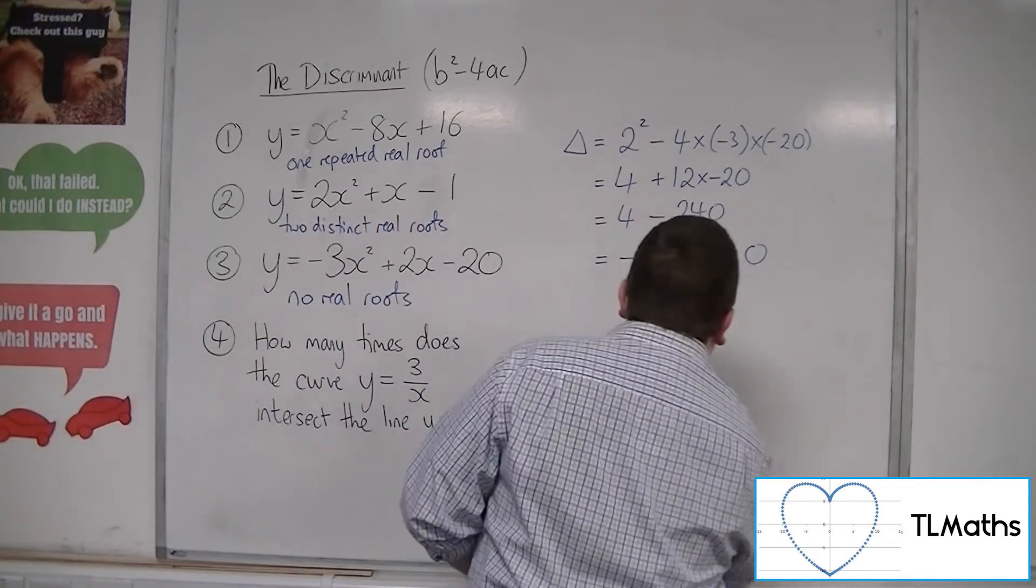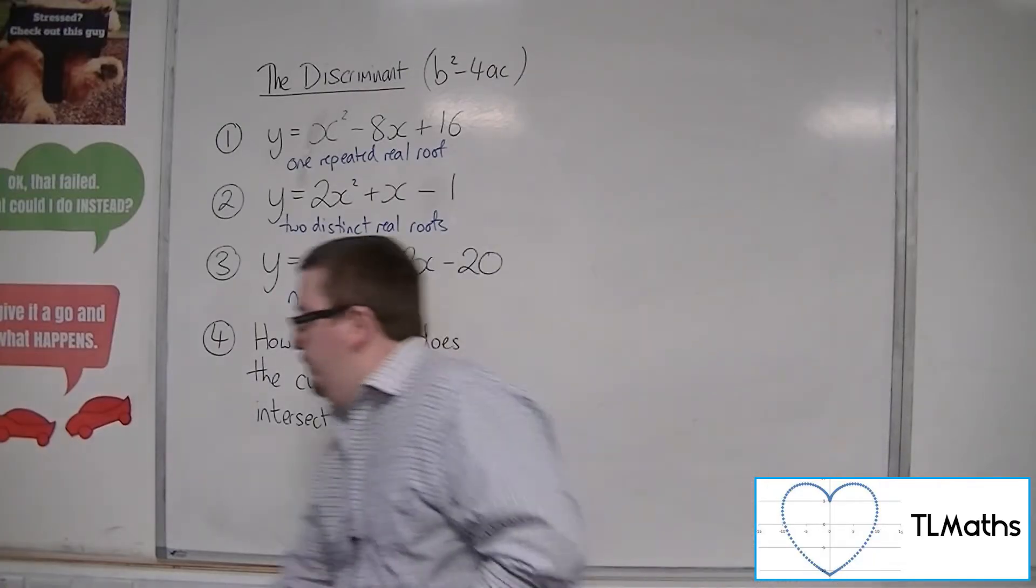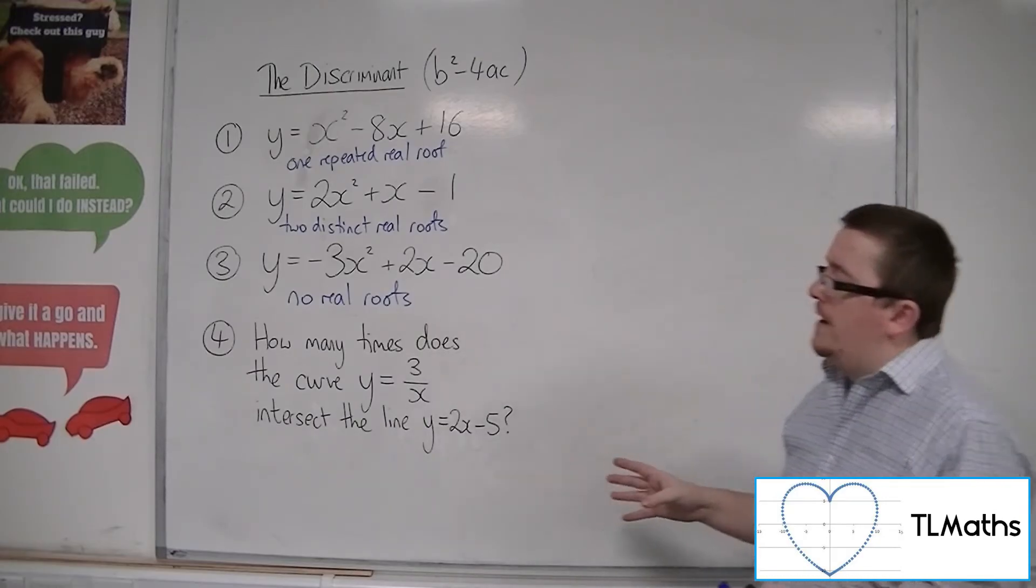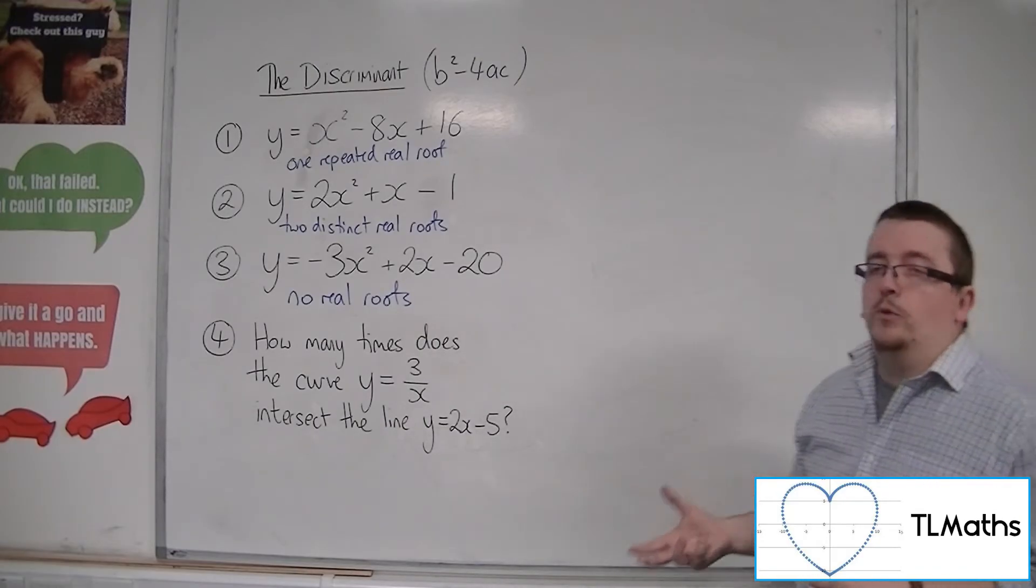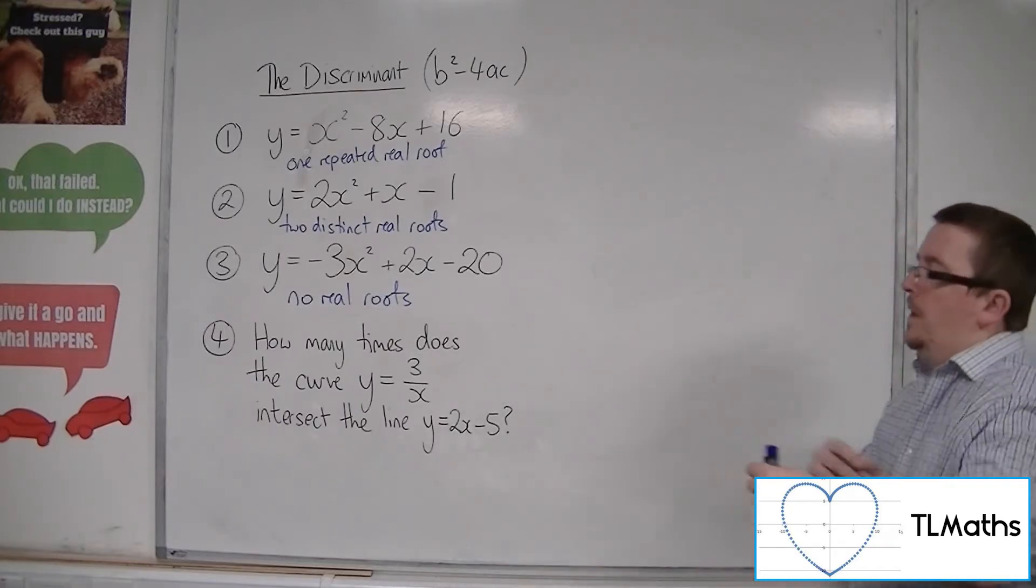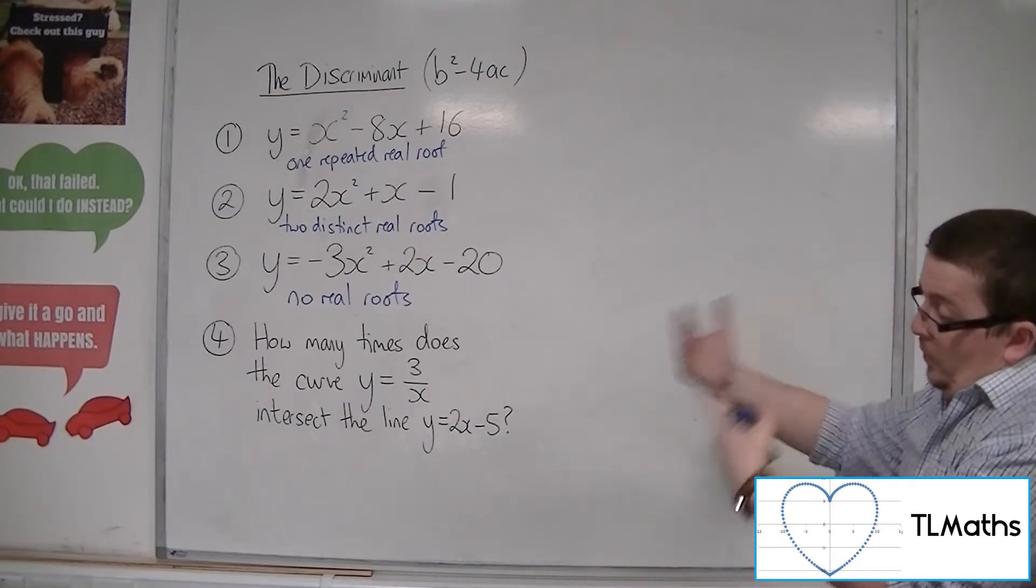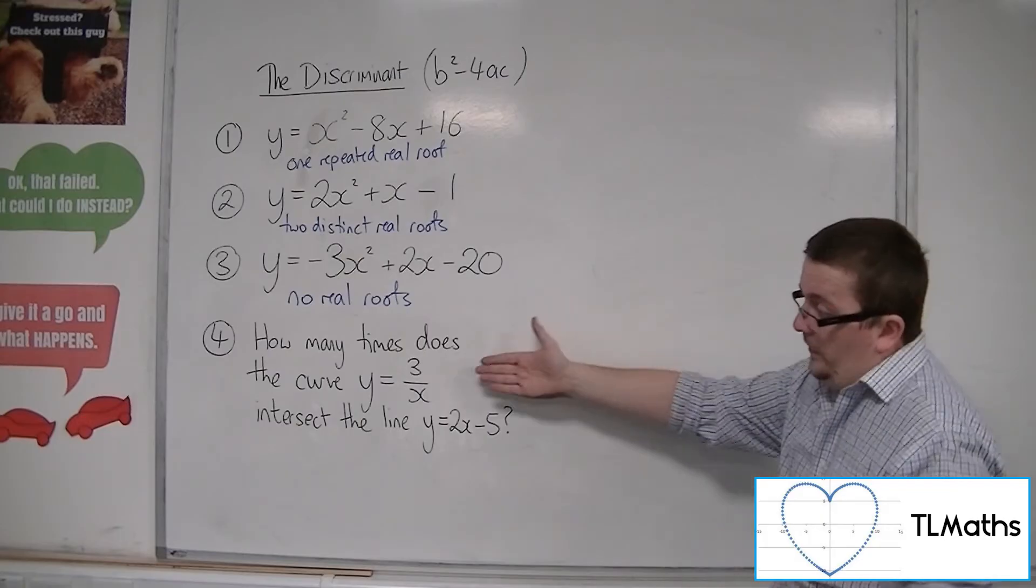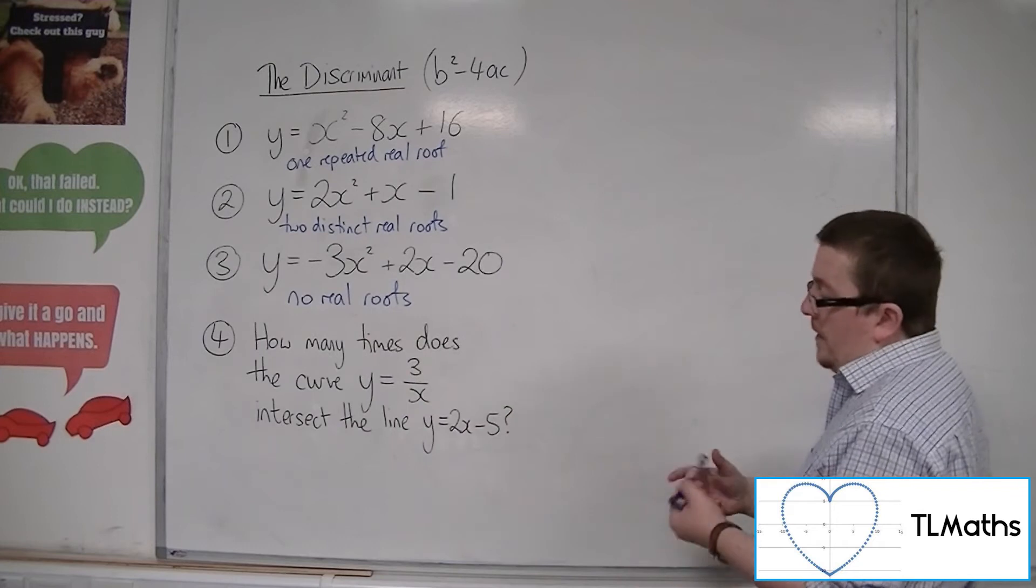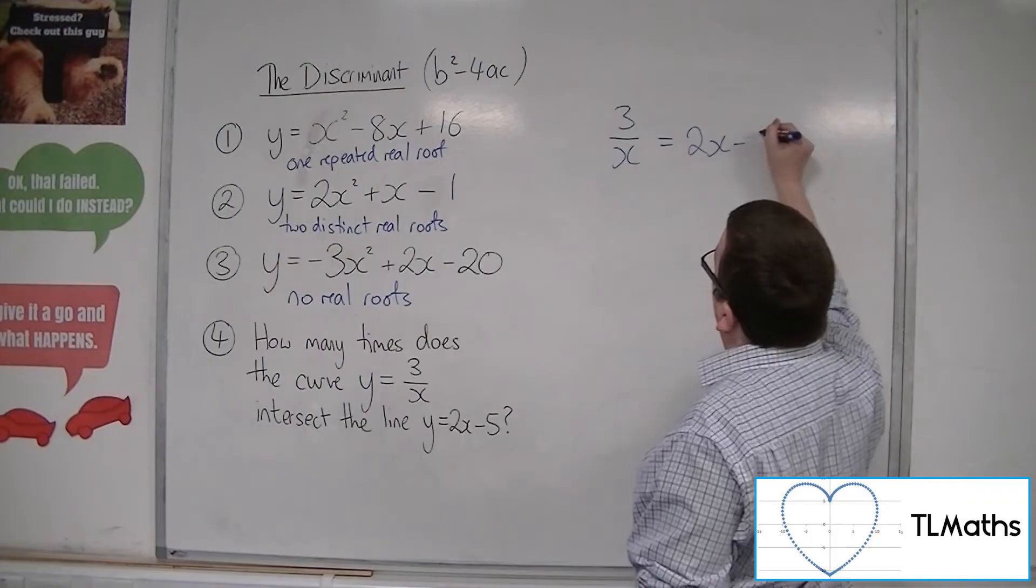So I've also included a slightly different problem here for number 4. So it's asking how many times does the curve y equals 3 over x intersect the line y equals 2x minus 5? Well, you can work out intersections by looking at simultaneous equations. So we can put this curve equal to the line, because they must both have the same y. So 3 over x must be equal to 2x minus 5.